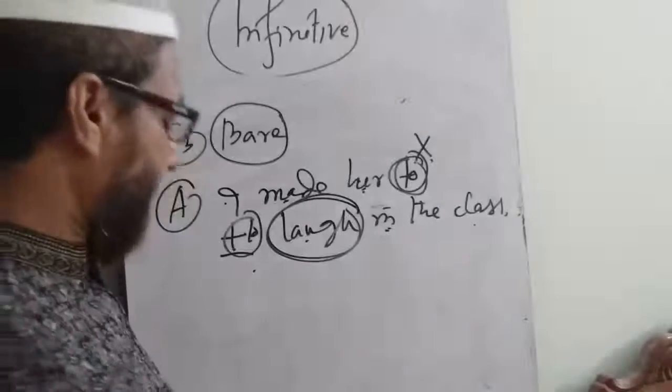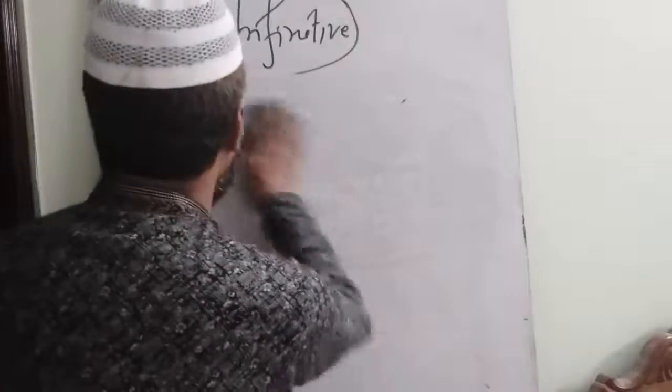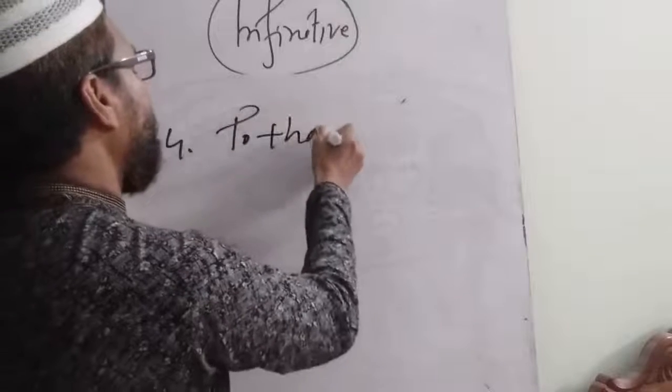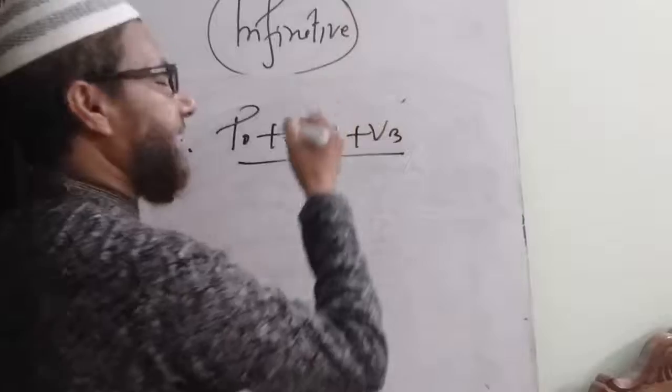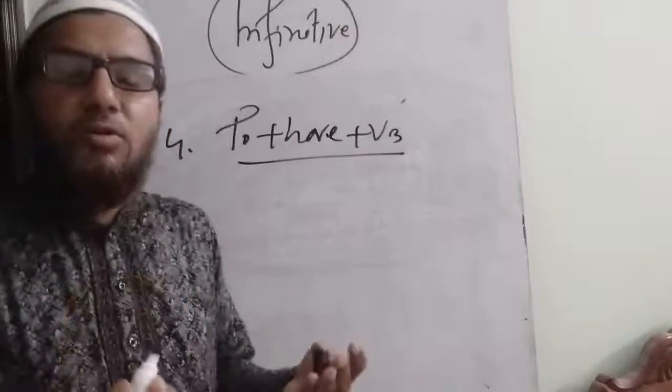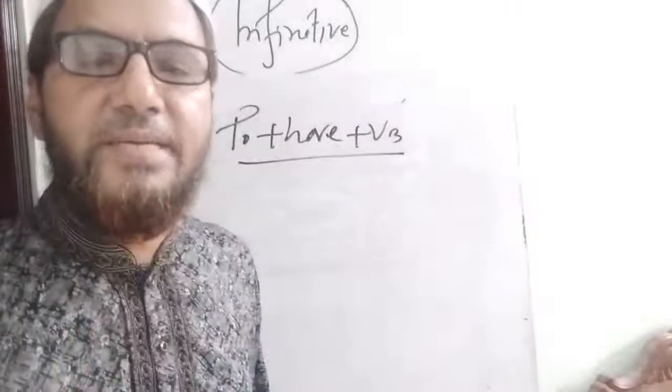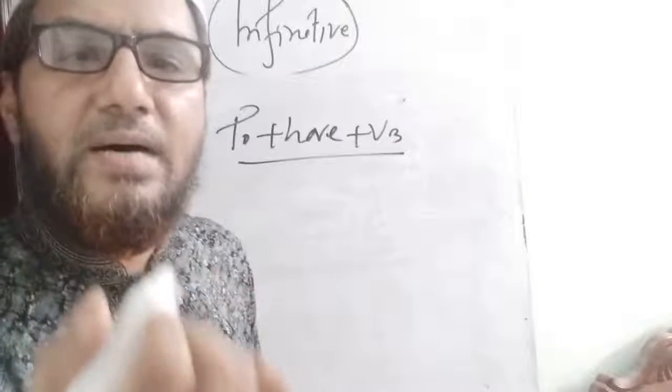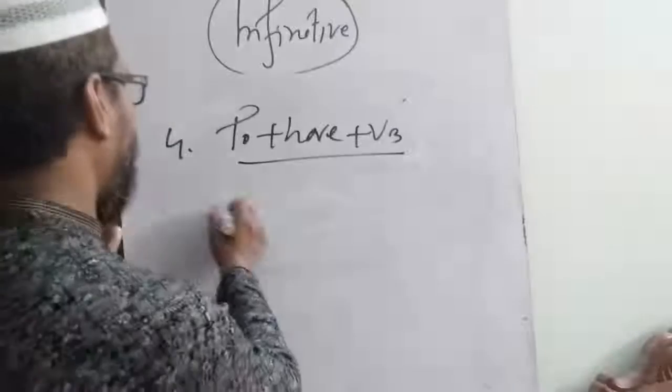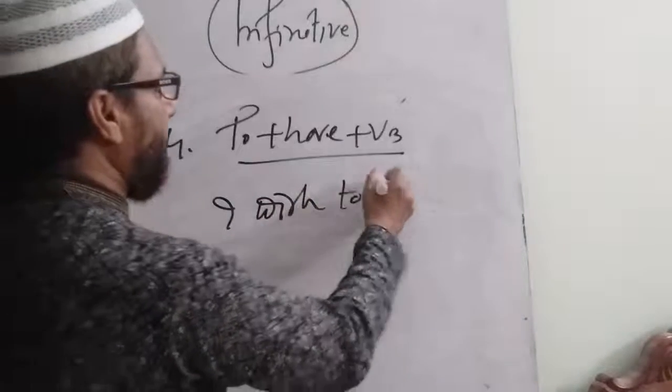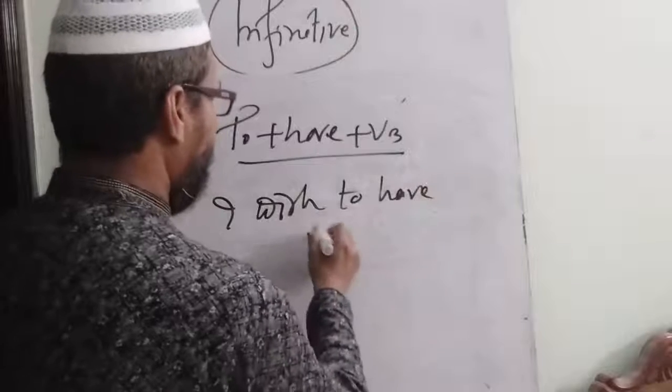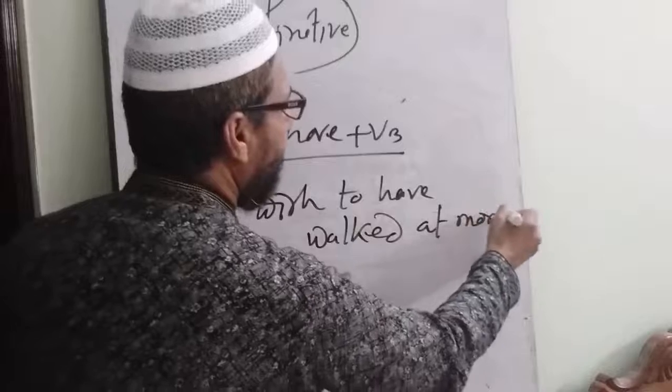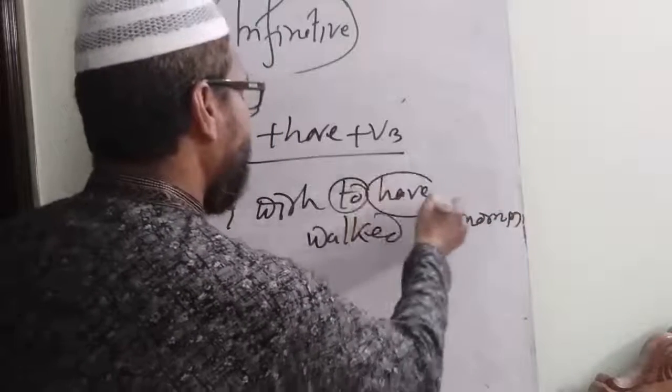Perfect infinitive: to have plus V3. Perfect infinitive example: I wish to have walked in the morning. To have plus past participle.